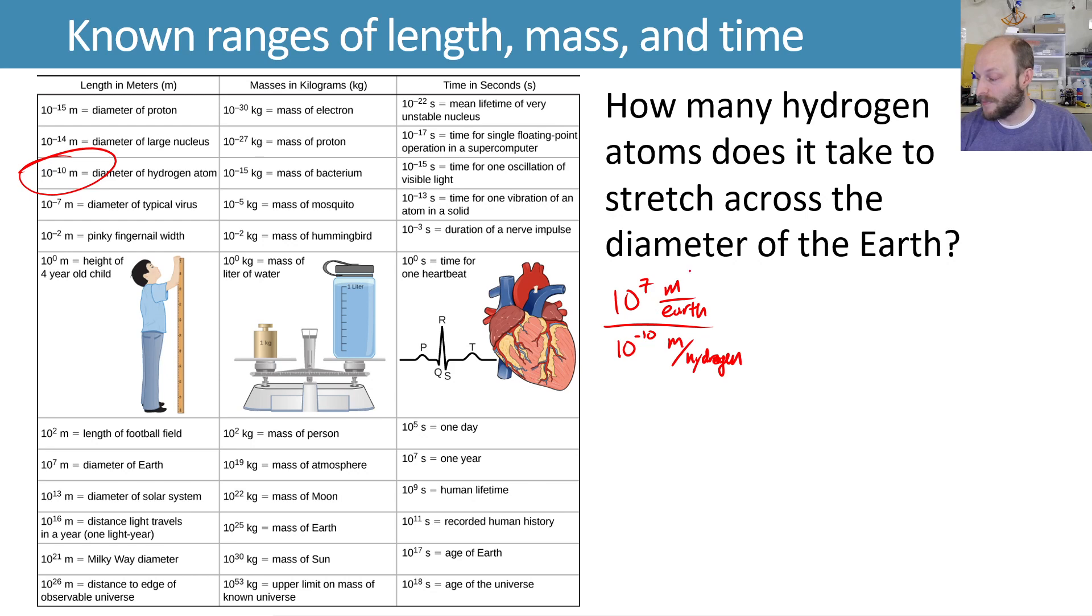And I'm dividing them so that these meters can cancel out, so that we can figure out how many hydrogens there are to span that Earth diameter. So in doing this, the meters cancel out. You've got 1 over Earth divided by 1 over hydrogen, so you'll get hydrogen per Earth. And we'll end up with a number that'll be the number of hydrogens that it takes to span one Earth.